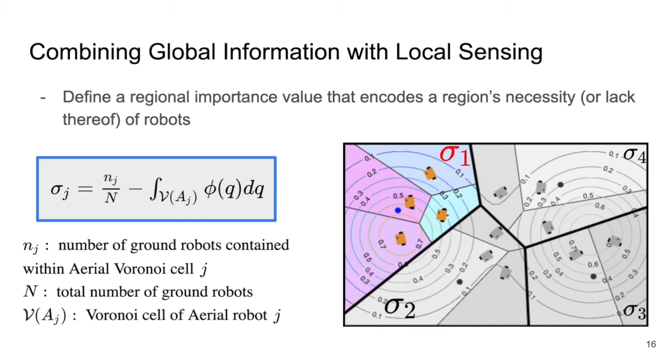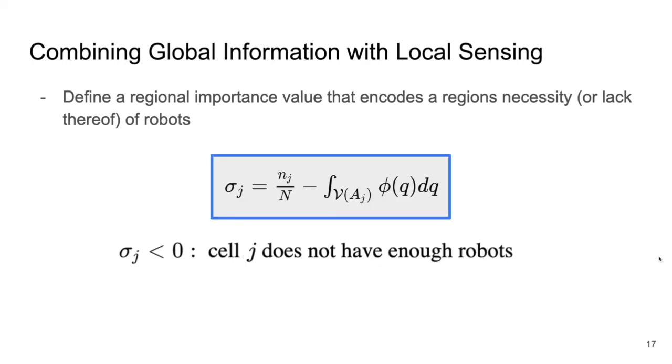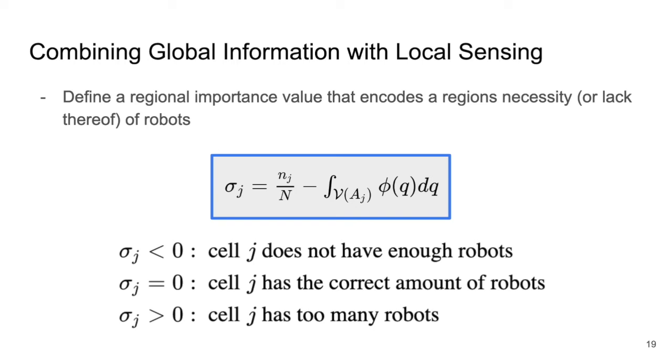On a farm, this could be a drone with a camera that measures how green a region is. Not a perfect measure of ripeness, but it's close. With this regional importance weight sigma, we can say that aerial cells with a negative weight are in need of more robots, aerial cells with a weight of zero have the correct amount of robots, and cells with a positive weight have a more than necessary amount of robots.